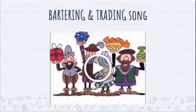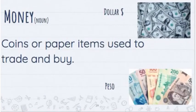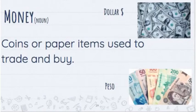Now that we've talked about bartering, we can talk about what the world uses now to get something, and that is money. Say it for me — money. Sing it for me — money, money, money! Oh yeah! Money is a noun — is it a person, place, or thing? If you said it's a thing, you are correct. Let's read the meaning, the definition, together. Point to the first word.